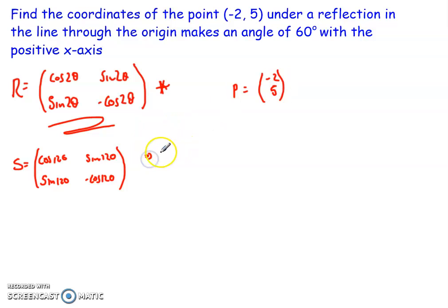Then all I have to do is to get P dash, so my new point under the transformation which is x dash y dash, all I do is I multiply them together. So I do cos 120, sin 120, sin 120, minus cos 120, and I'm multiplying that by the P which is (-2, 5).